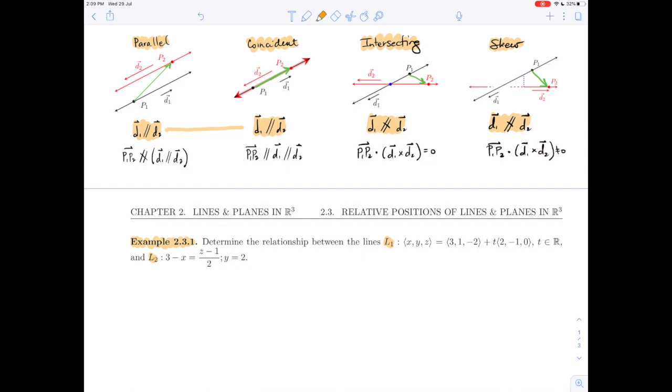To distinguish between parallel and coincident lines, we looked at the vector p1, p2. In parallel lines, p1, p2 was not parallel to the two direction vectors. Whereas in coincident lines, p1, p2 was parallel to both.